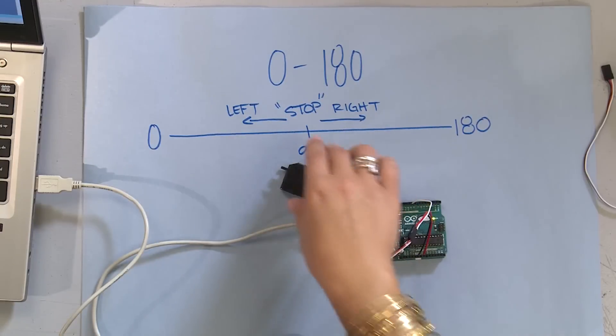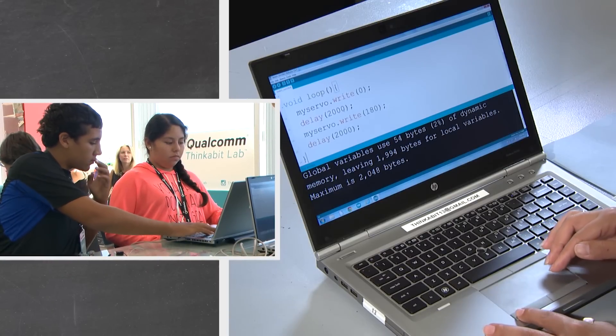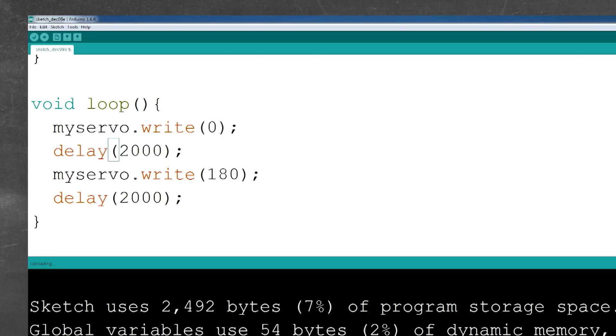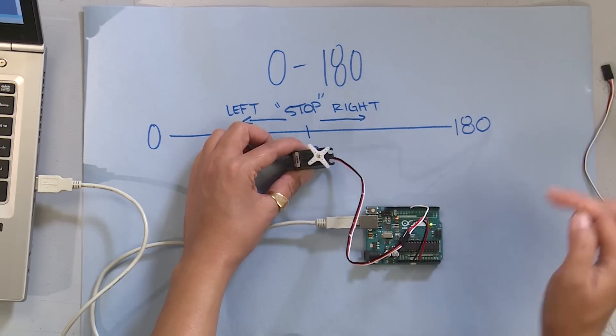I'm going to change - you can change values in the delay or change values in the myServo.write inside those parentheses. Let's start with delay. Instead of 2000, let's put 200 and see what happens.